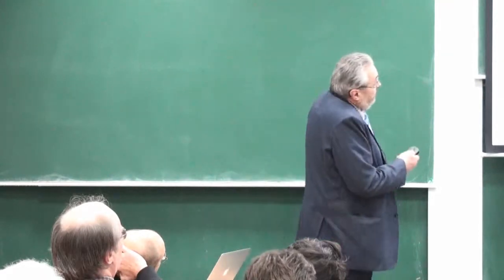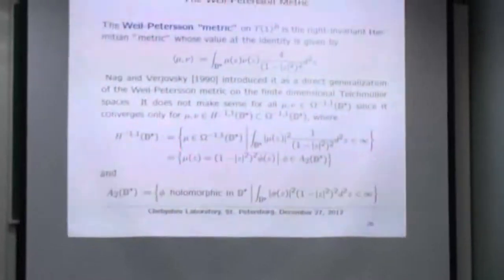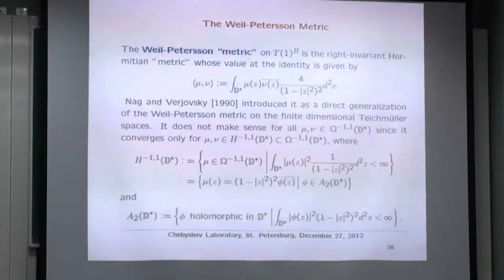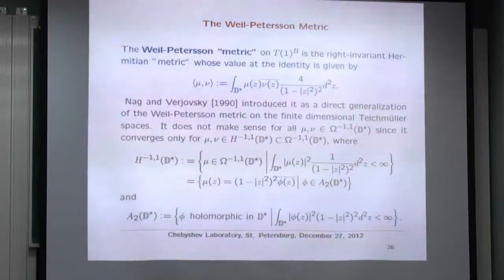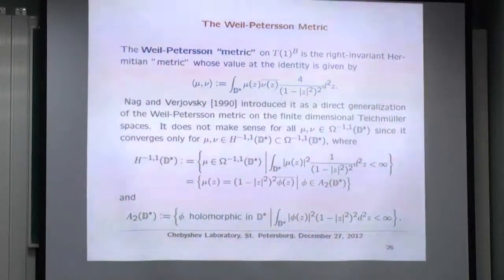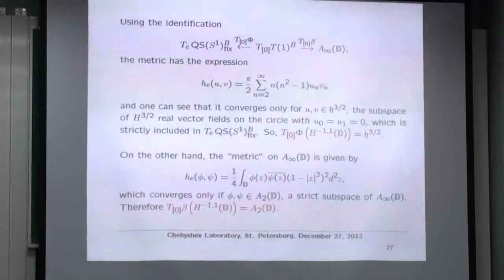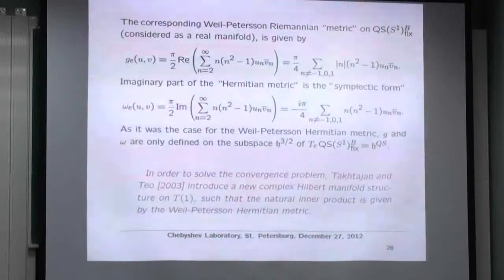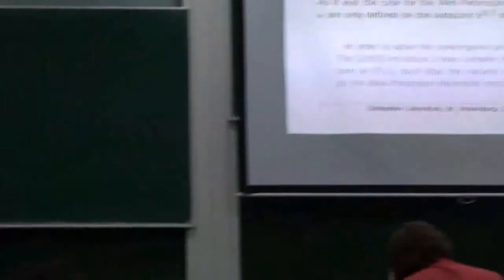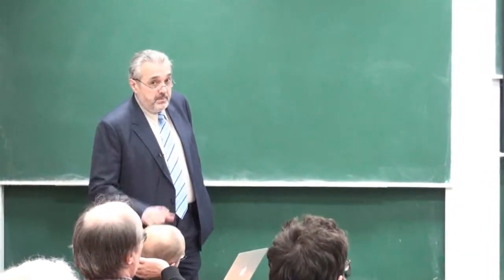However, if you look carefully, the metric does converge on another space. I introduce H^{−1,1}: all μ's that are L² relative to the Poincaré measure — or equivalently, a product of this measure factor times φ(z̄) with φ in L²-analytic, previously it was L∞-analytic. This was solved by Takhtajan and Teo in a series of preprints that appeared later as a single issue in the Memoirs. It's one of the best papers I've read in many years.